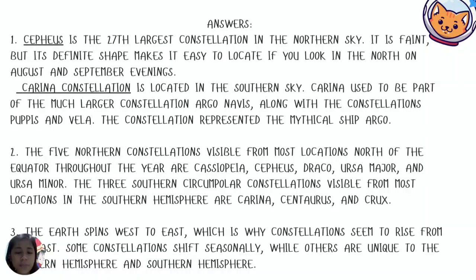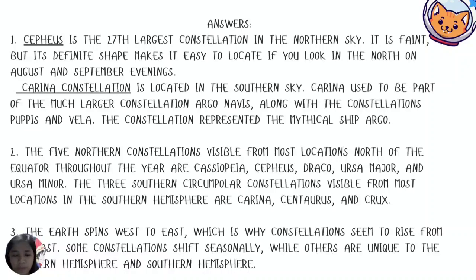For number two, the five northern circumpolar constellations visible from most locations north of the equator throughout the year are Cassiopeia, Cepheus, Draco, Ursa Major, and Ursa Minor. The three southern circumpolar constellations visible from most locations in the southern hemisphere are Carina, Centaurus, and Crux. For number three, the earth spins west to east, which is why constellations seem to rise from the east. Some constellations shift seasonally while others are unique to the northern or southern hemisphere.